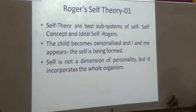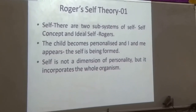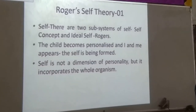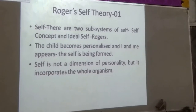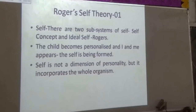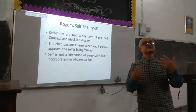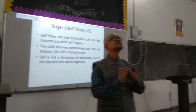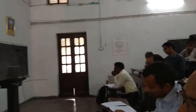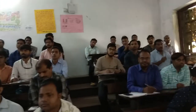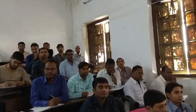The second construct is self. There are two subsystems of self: self-concept and ideal self. Rogers tells that within the self itself there are two subsystems. Self-concept means what you are thinking about yourself — which type of individual you are. Knowing yourself is self-concept. And ideal self — you may not be the ideal self, but you have an ideal self in your mind.